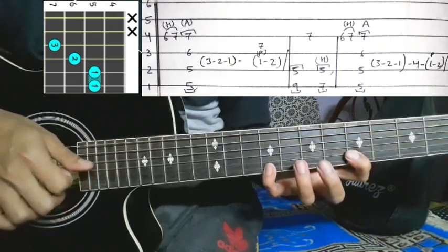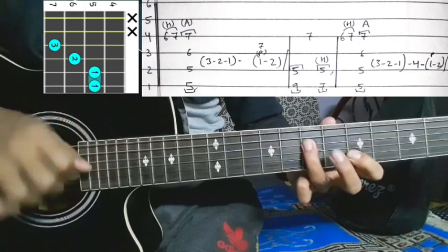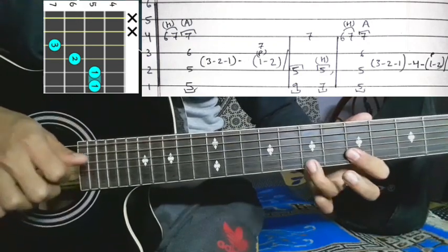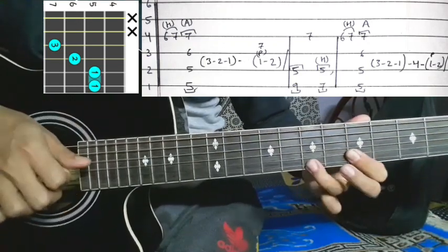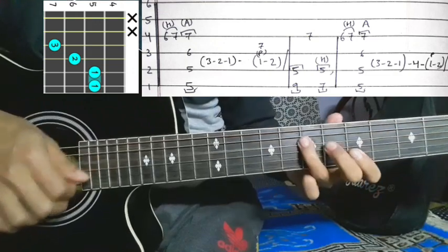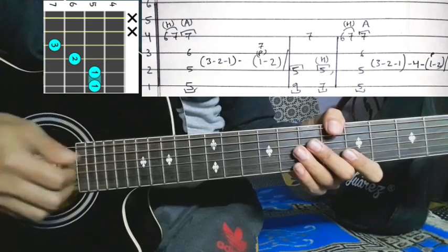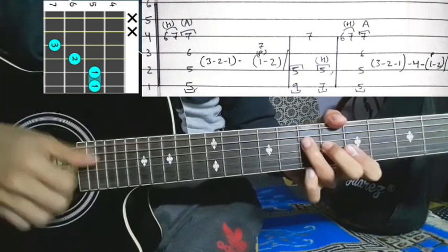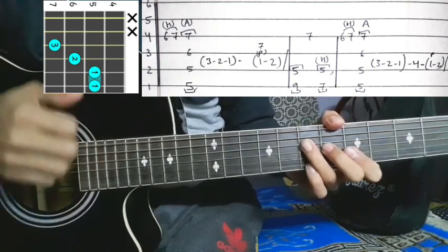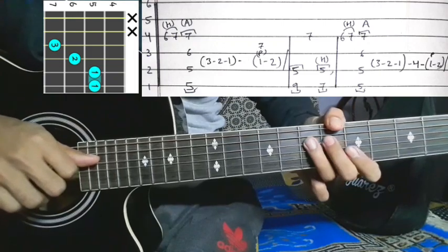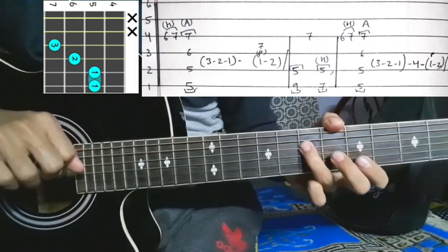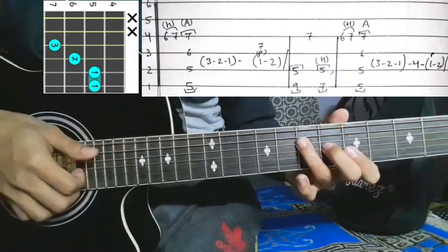Second part continues: five, nine with picking, first string at seven and three, five percent hammer-on. That's how you do the hammer-on. Yes, that's the second part. The third part: first string, fourth string at six hammer-on, then three to one with picking.